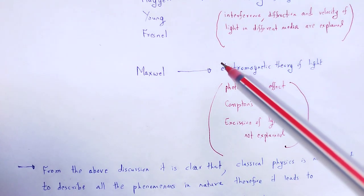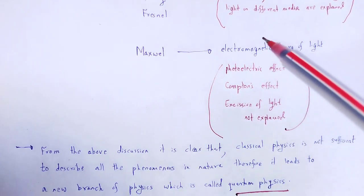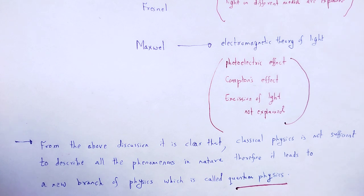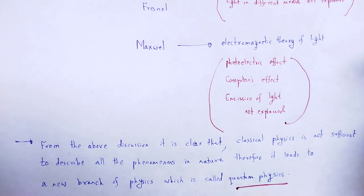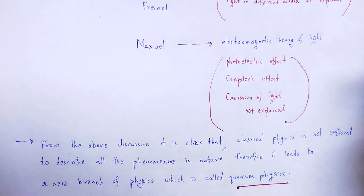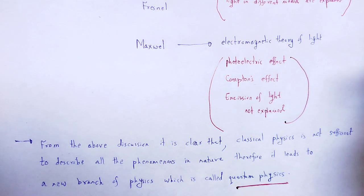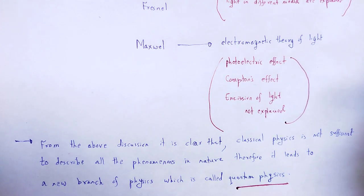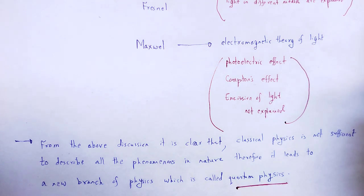By using an example, we showed that all phenomena are not described by classical physics, so we need a new branch of physics which is called quantum physics. With this useful and informative note, let me wind up the session. Thank you.